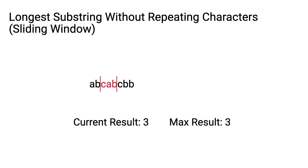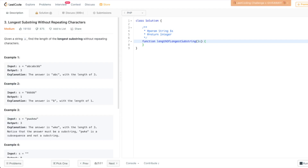We repeat this process until we reach the end of the string, and each time we store the maximum result we found during that process. We've reached the end now and the maximum result we found is three for this string. Now let's take a look at how to solve this problem programmatically in PHP using the sliding window technique.